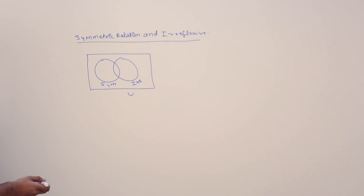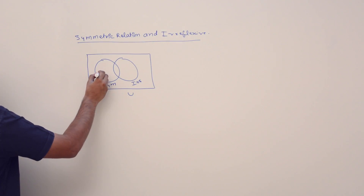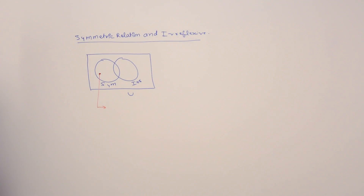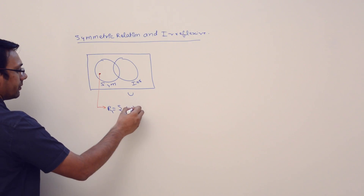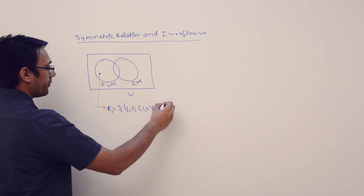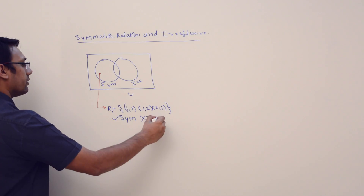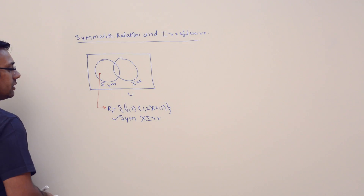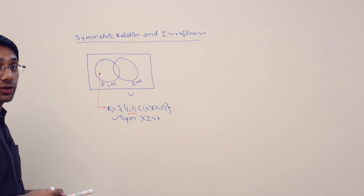Let us try to give an example of a relation which is symmetric but not irreflexive. Consider the relation R1 = {(1,1), (1,2), (2,1)}. This relation is symmetric, but it is not irreflexive. Why is it not irreflexive? Because of the pair (1,1) — that pair makes this relation not irreflexive.